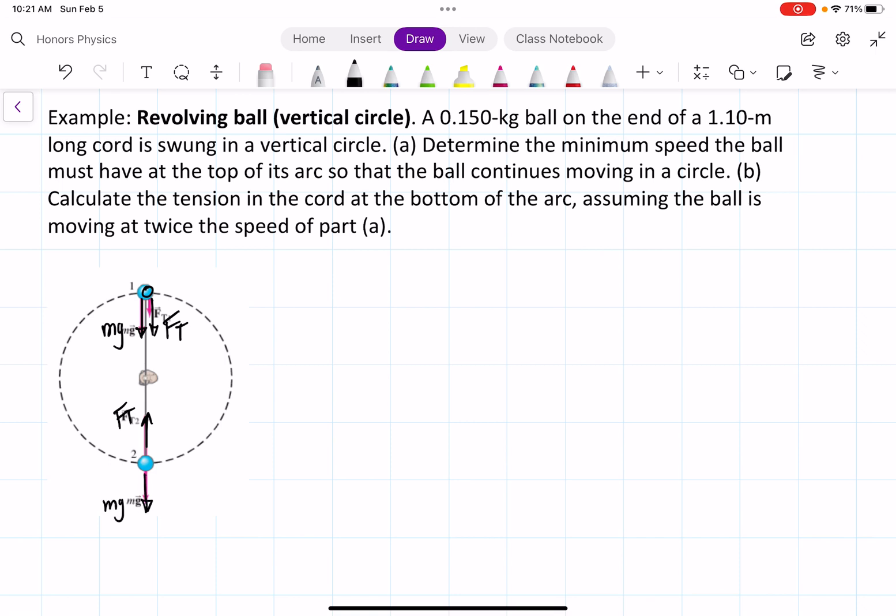Alright, so what we're going to do is write down what is known. We have the mass is equal to 0.15 kilograms, and the radius is 1.10 meters.